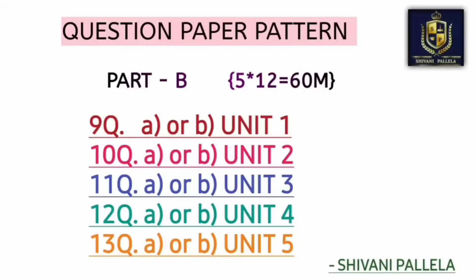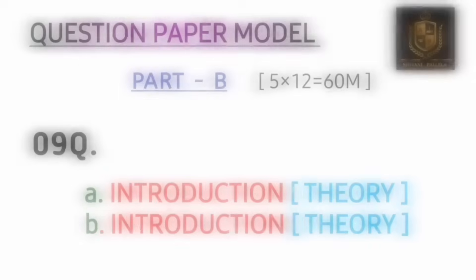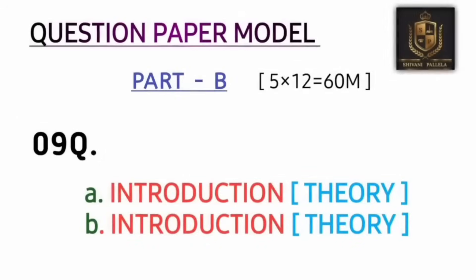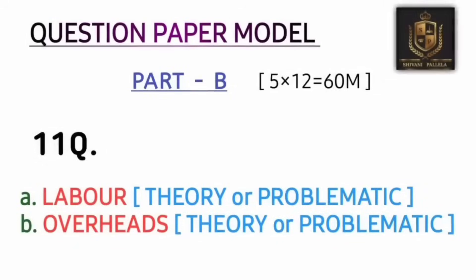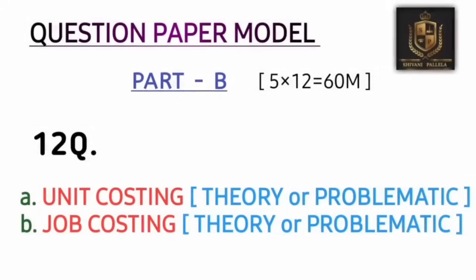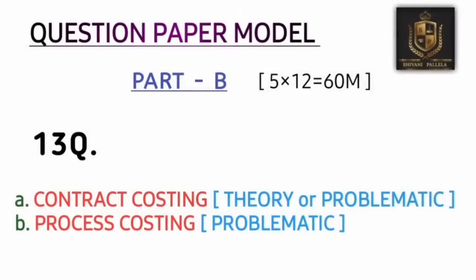Question nine comes from unit one, question ten from unit two, and so on. Part B is the most weightaged section at 60 marks. Questions 9A and 9B come from Introduction, 10A and 10B from Materials. Question 11A comes from Labor and 11B from Overheads. Question 12A covers Unit/Output Costing, 12B covers Job Costing, 13A covers Contract Costing, and 13B covers Process Costing.